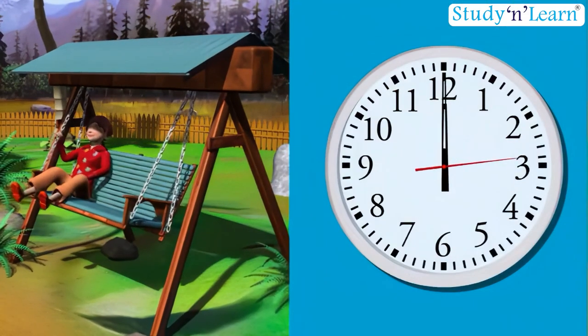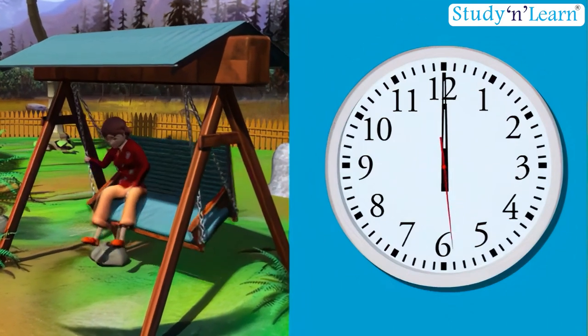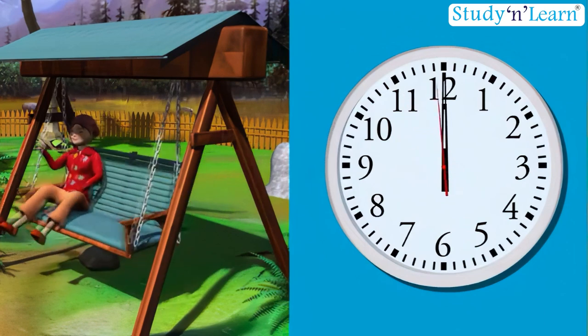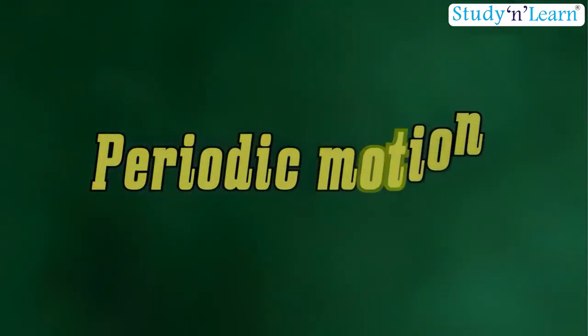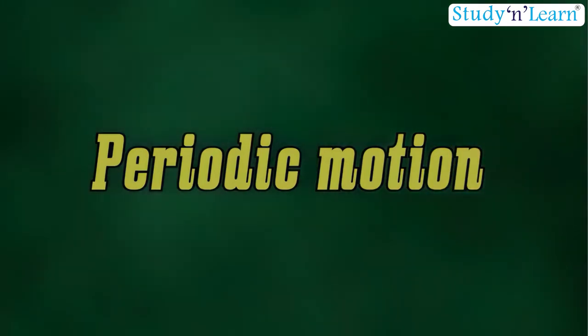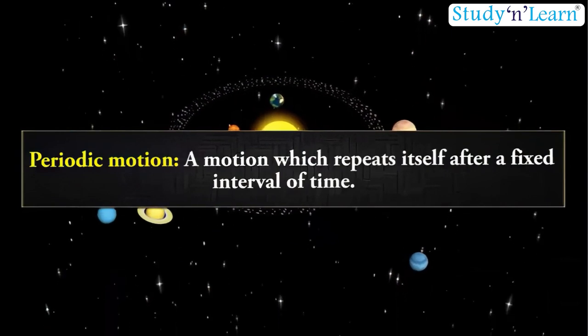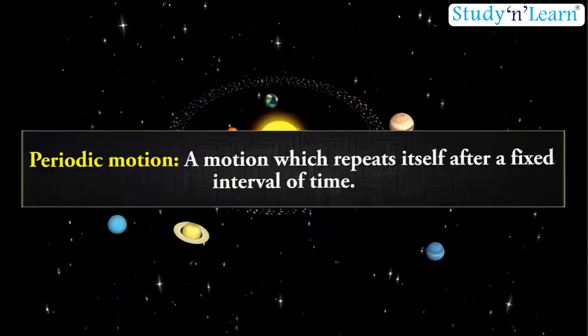But before going any further, let us define a few terms. Periodic motion: A motion which repeats itself after a fixed interval of time.